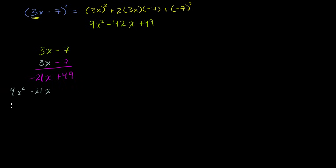Scroll to the left a little bit. Add everything. You're left with 9x squared minus 42x plus 49.